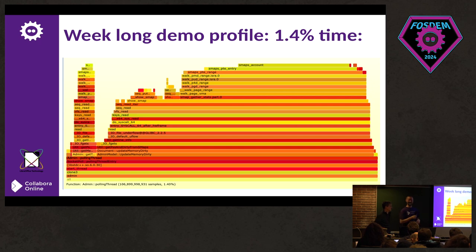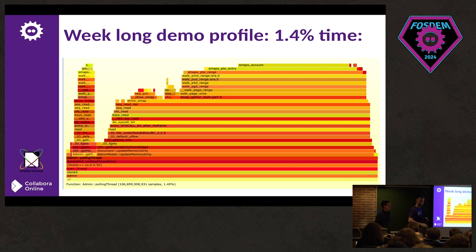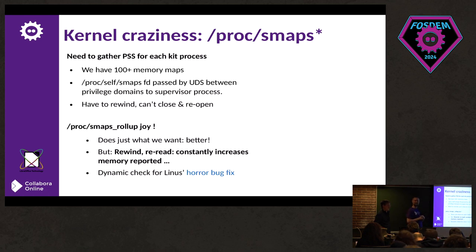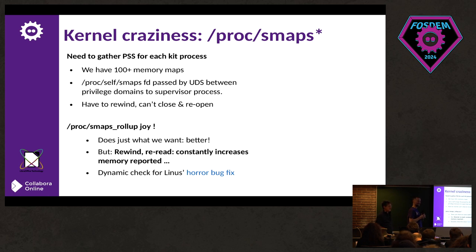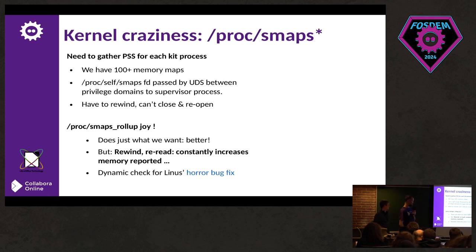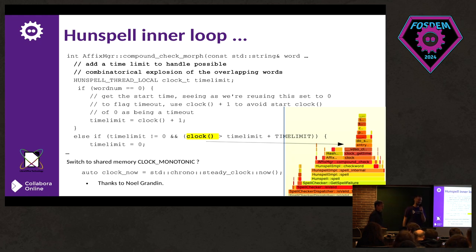We were reading /proc/smaps to measure memory usage — but smaps has many entries, so you read many lines. There's a newer file, /proc/smaps_rollup, which gives pre-summed totals. Same code should work — but we were being told we'd run out of memory, which was very bizarre. It turns out that if you seek back to the beginning and read again, the numbers double every time. There's an actual kernel bug, not present in kernel v6 but present in v5.18 or v5.16 — the version the servers were running. Linus fixed it, but you need to check you have the right kernel version.